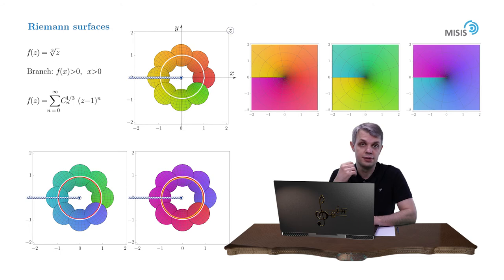And again, the color denotes the argument of the function. On the formal language, each sheet corresponds to a particular value of g, entering the definition of the Riemann surface. And g in our case assumes the value of 0, 1 and 2.